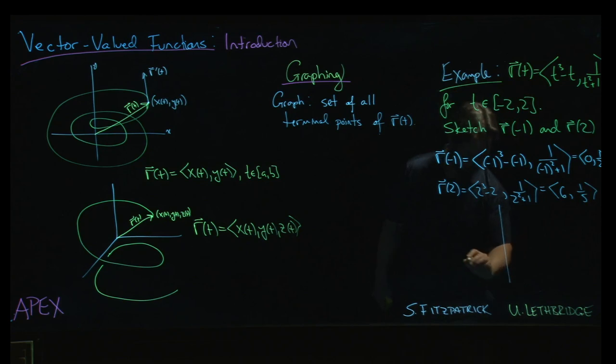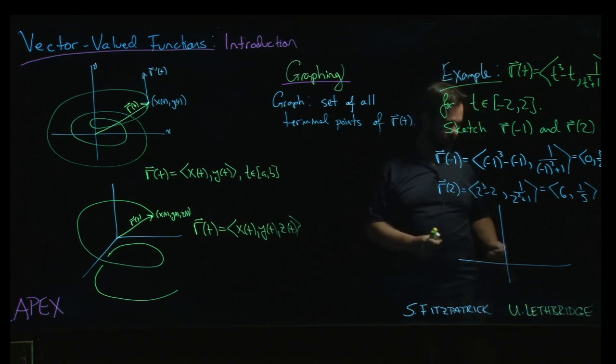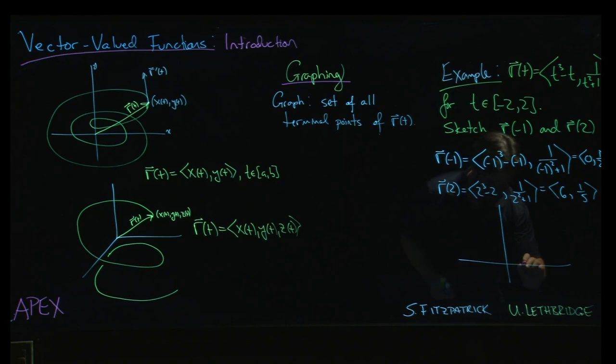And then if we wanted to plot those two vectors, sketch our coordinate system. It's a two-dimensional vector, so we're going to plot it in the plane, and let's draw them in red. So r of minus 1, if we have 1, 2, so there's 1, there's 2, 1, 1, 2. So this vector points straight up, x component is 0, y component is 1 half. So it's going to look something like that. r of minus 1.